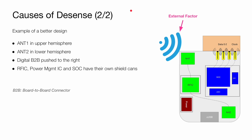Here is an example of a better design. Antenna 1 stays in the upper hemisphere, while antenna 2 has been pushed to the lower hemisphere to increase antenna-to-antenna isolation. The digital board-to-board connectors have been pushed to the right, increasing isolation between antenna 1, the data lines, and clock lines. The RFIC, the power management IC, and the SOC each have their own shield cans depicted in these black boxes.